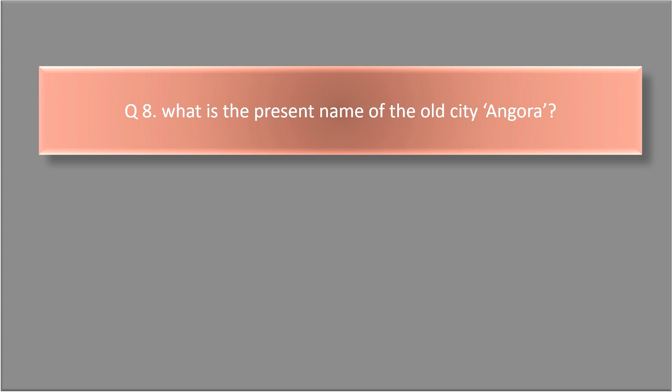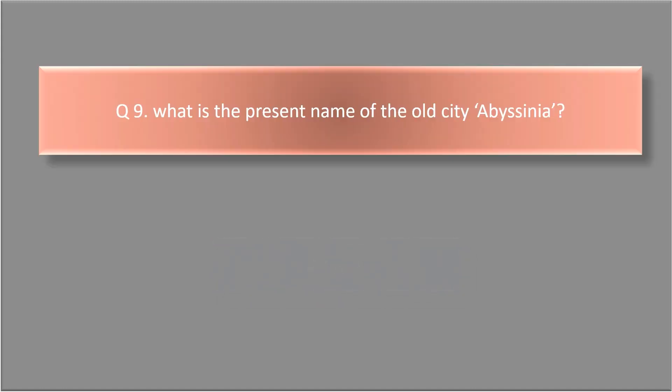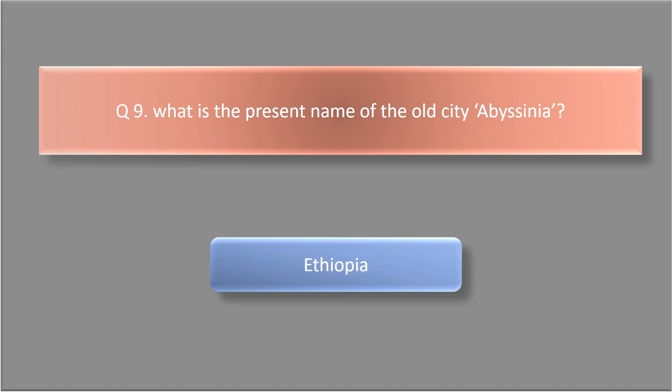What is the present name of the old city Angora? The answer is Ankara. What is the present name of the old city Abyssinia? The answer is Ethiopia.